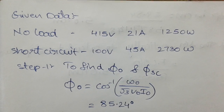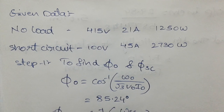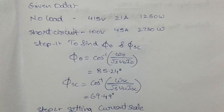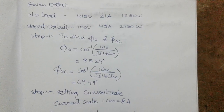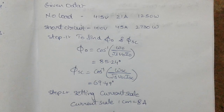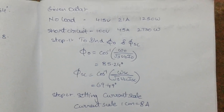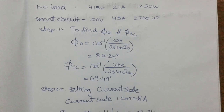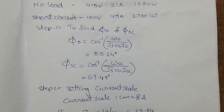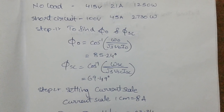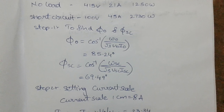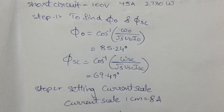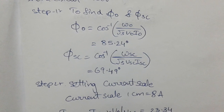Hi friends. This is the given data about the no-load and short circuit tests. We have to consider the angles φ0 and φsc obtained from the no-load and short circuit data. To find the angle φ0, use the formula cos inverse of W0 by root 3 times V0 times I0, which gives 85.24 degrees. For φsc, use cos inverse of Wsc by root 3 times Vsc times Isc, which gives 69.49 degrees.